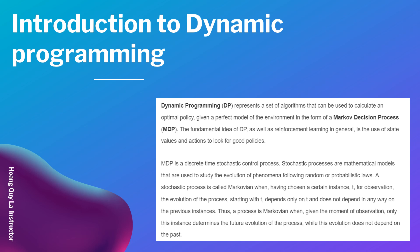MDP is a discrete-time stochastic control process. Stochastic processes are mathematical models used to study the evolution of phenomena following random and probabilistic laws. A stochastic process is called Markovian when, having chosen a certain instant t for observation, the evolution of the process starting from t depends only on t and does not depend in any way on previous instances. Thus a process is Markovian when only the current instant determines the future evolution of the process, while this evolution does not depend on the past.